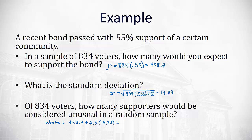And if we run that through our calculators, 458.7 plus 2.5 times 14.37, we'll find having more than 494.625, anything more than that would be considered unusual. We probably have a biased sample.